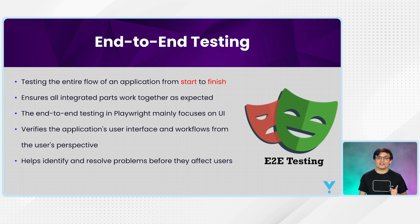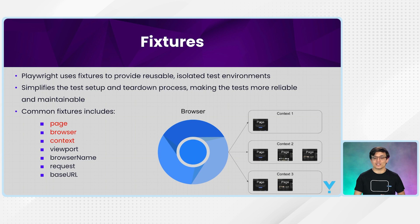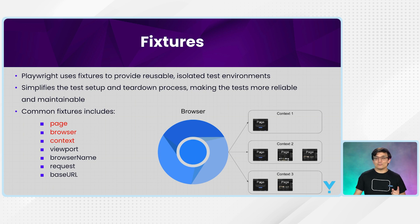In the Playwright Test package, fixtures are available that you can use directly for automation. Playwright uses fixtures to provide reusable and isolated test environments — every single test is executed in an isolated environment achieved through fixtures. These fixtures also have global configurations where you can configure Playwright settings, and they simplify test setup and teardown processes like before and after methods.